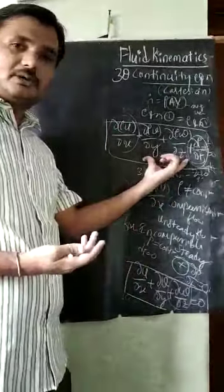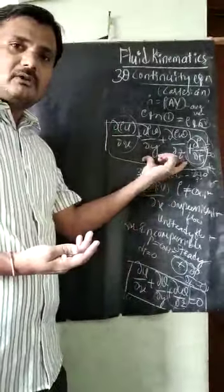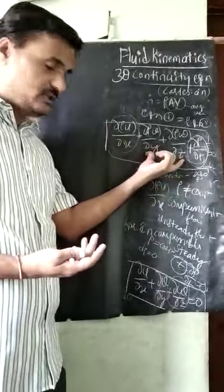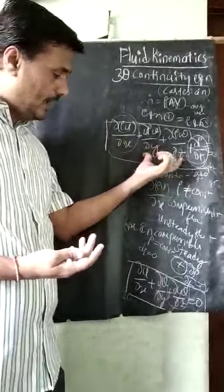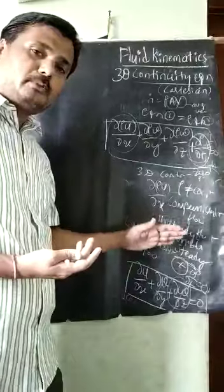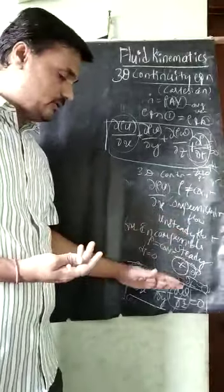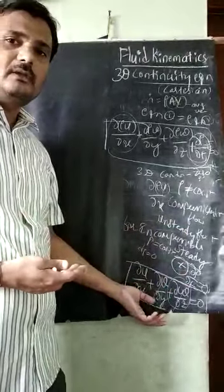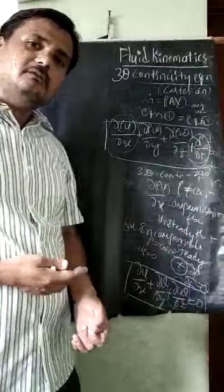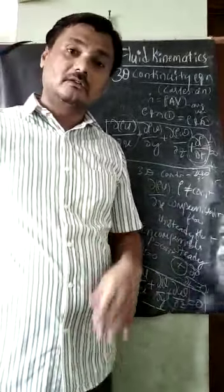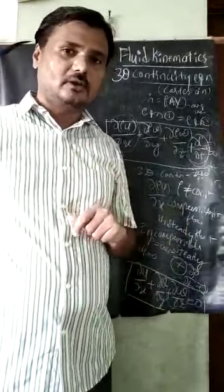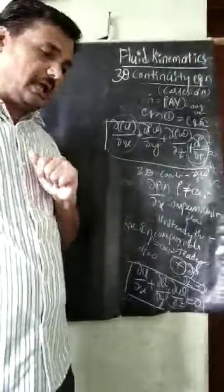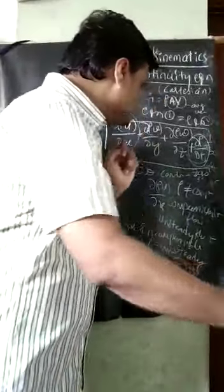Generally, the full equation applies for compressible, unsteady, 3D flow. For incompressible steady flow, the equation takes a different form because density is constant and not varying with respect to time.